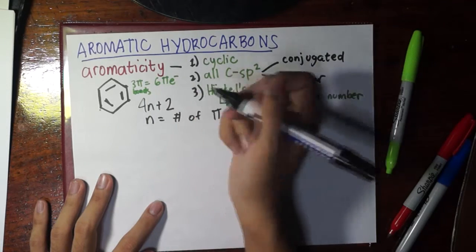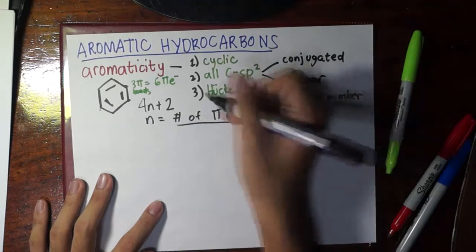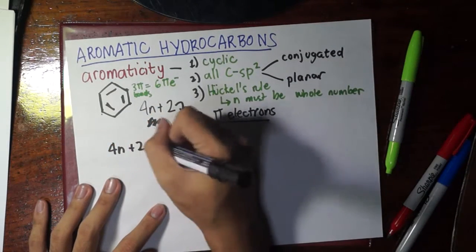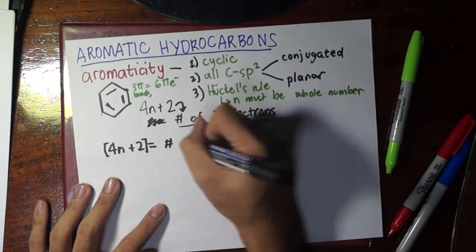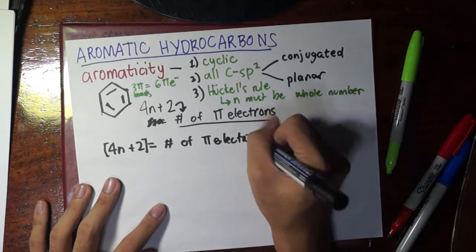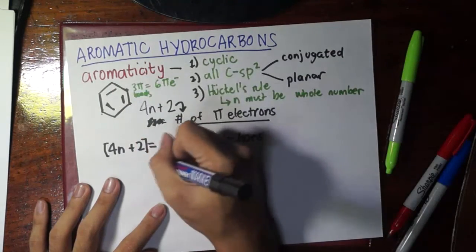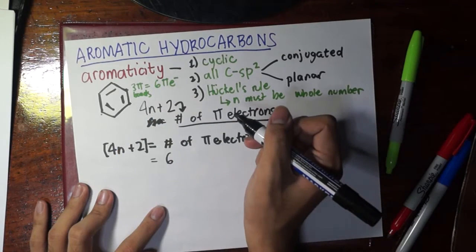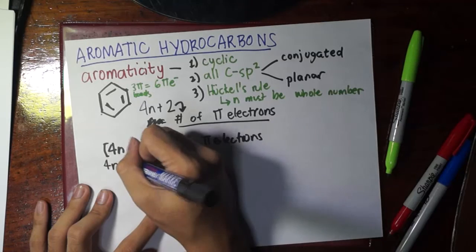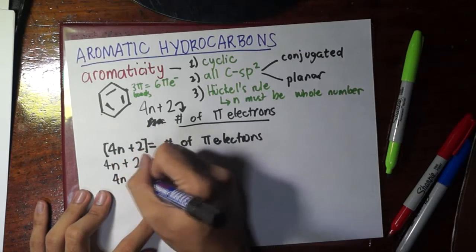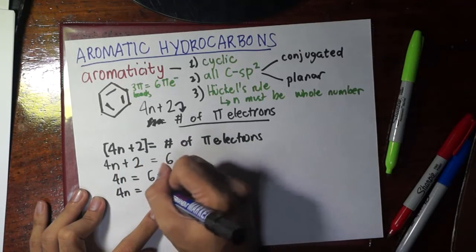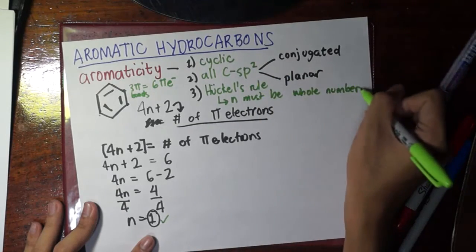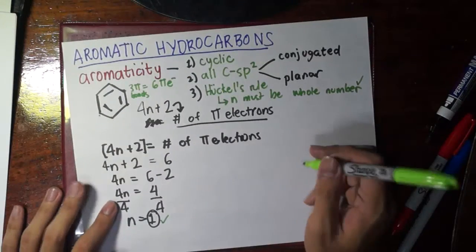So to clarify: 4n + 2 yields the number of pi electrons, and n should be a whole number. In benzene we have six pi electrons, so 4n + 2 = 6. Transposing: 4n = 4, so n = 1. Is one a whole number? Yes — check. So benzene follows Hückel's rule. Those are the three requirements for aromaticity.